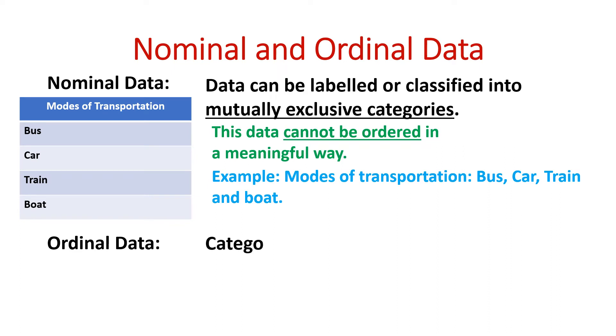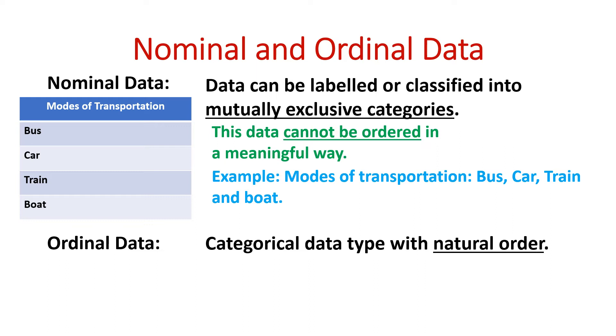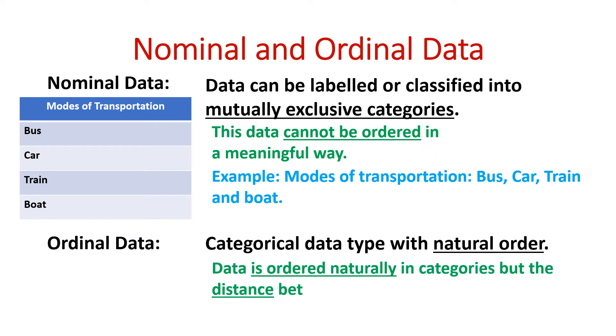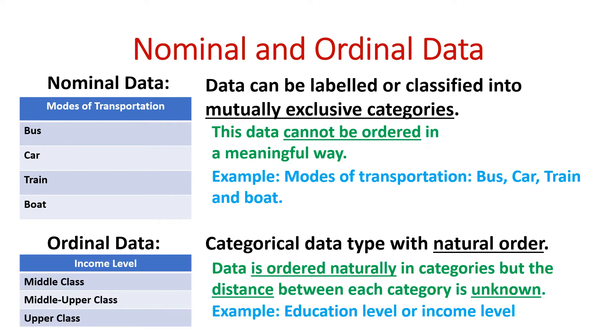Ordinal data is a categorical data type with natural order. Data is ordered in natural categories, but the distance between each category is unknown. Examples of this could be education level or income levels.